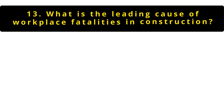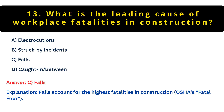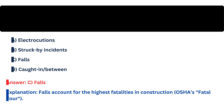Question 13: What's the leading cause of construction fatalities? Option A: Electrocutions. Option B: Struck-by incidents. Option C: Falls. Option D: Caught-in or between. The answer is C — Falls. OSHA's Fatal Four places falls from roofs, ladders, or scaffolds as the top cause, accounting for over one-third of construction deaths. That's why fall protection is non-negotiable.